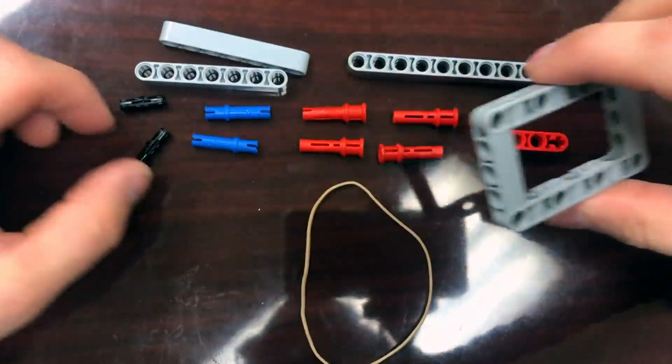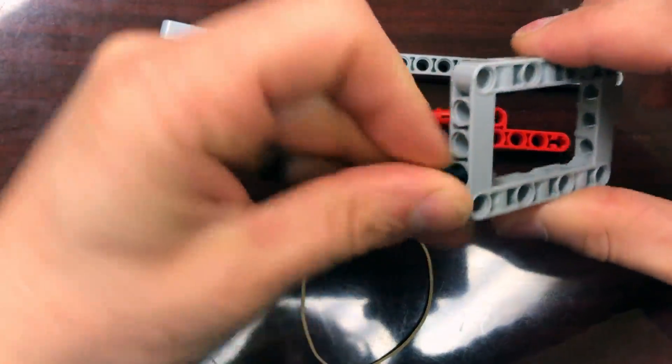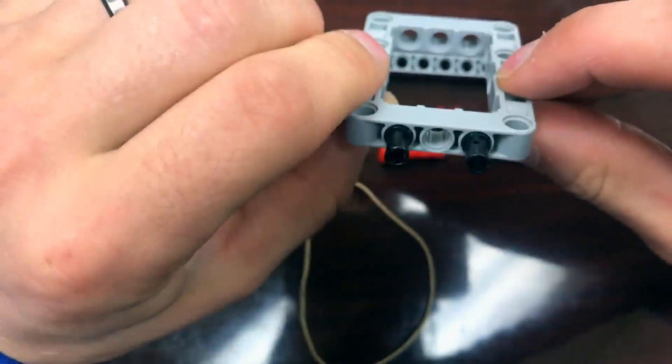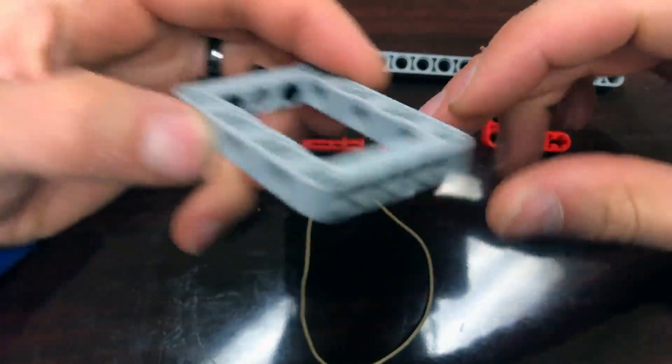All right, so the first thing I'm going to do is take the black pegs and put them in the end of the picture frame just like this. And then I'm going to turn it around.